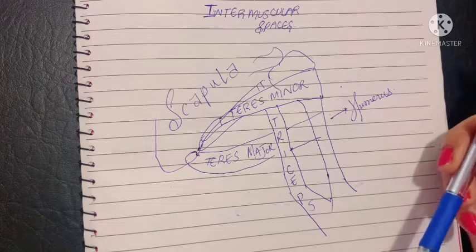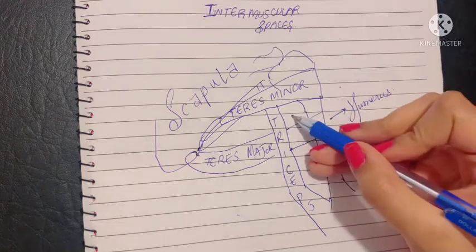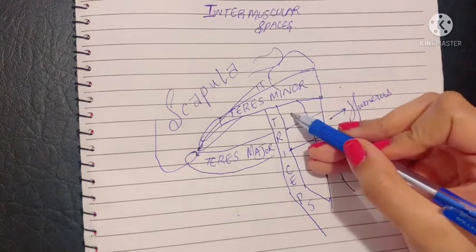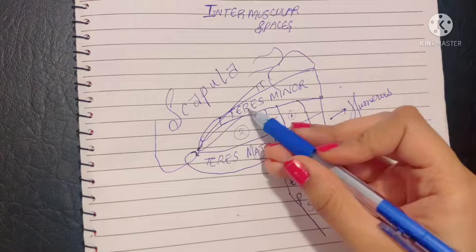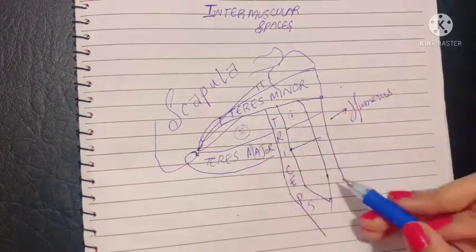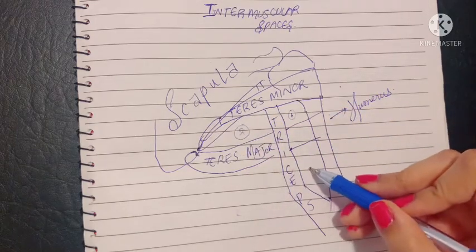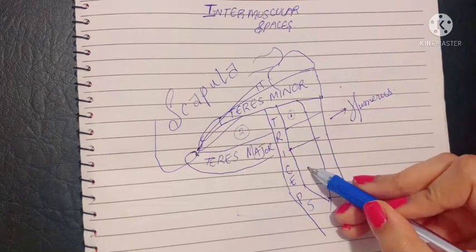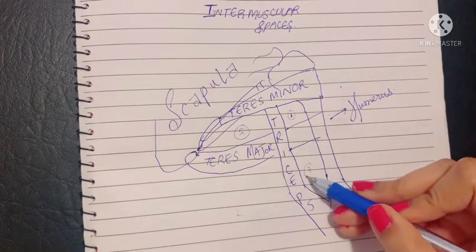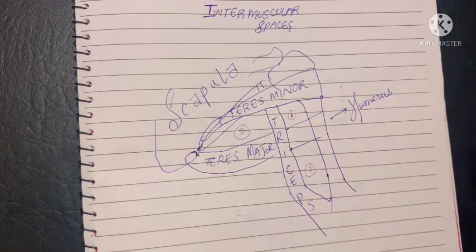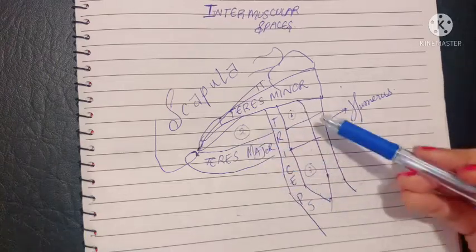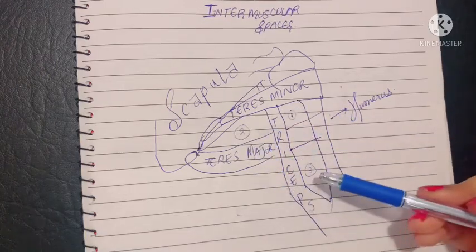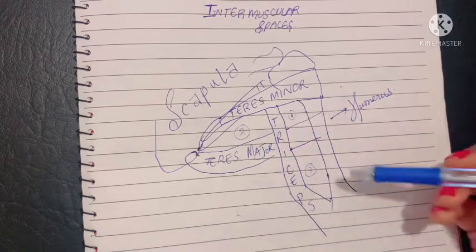These three spaces are: number one, the quadrangular space; number two, the upper triangular space; and number three, the lower triangular space. Let's talk about each of these spaces, their boundaries and their contents.